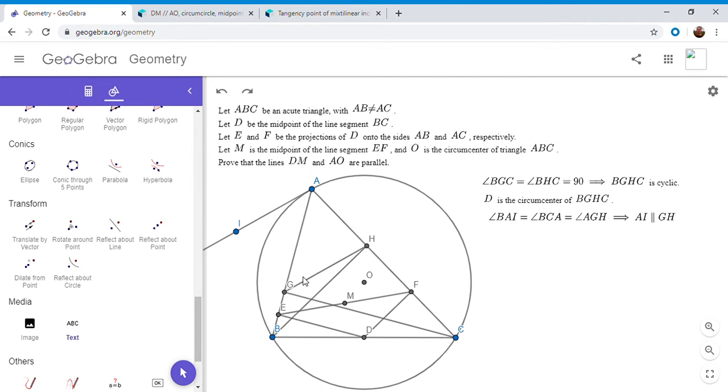And so since those are alternate interior angles, AI has to be parallel to GH. But so if AI is parallel to GH, well, we know AI is perpendicular to AO because it's a tangent at point A. So since AI is perpendicular to AO, then AO has to be perpendicular to GH.